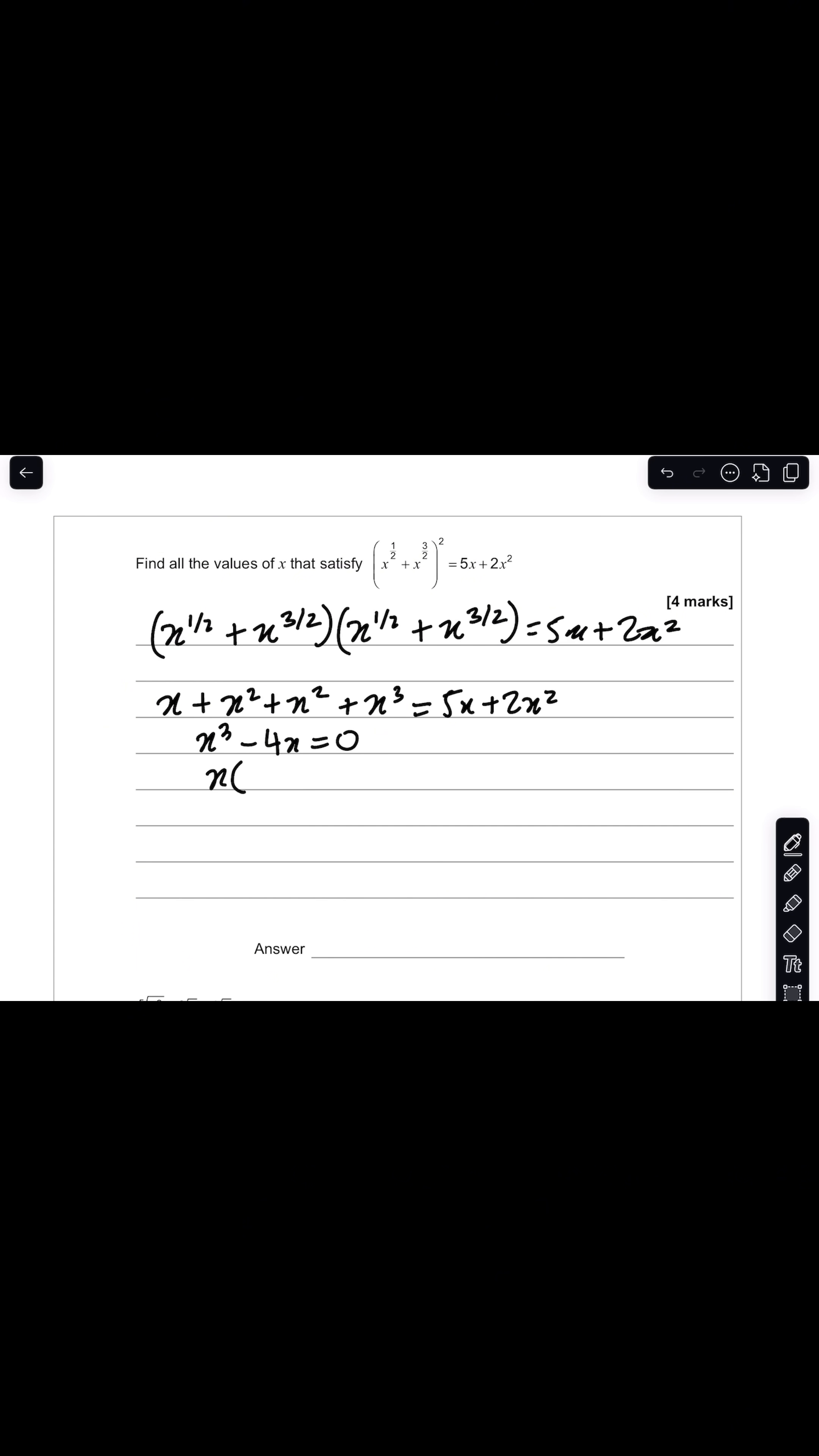So if I take out a factor of x, I have x times x squared minus 4, and that equals 0.